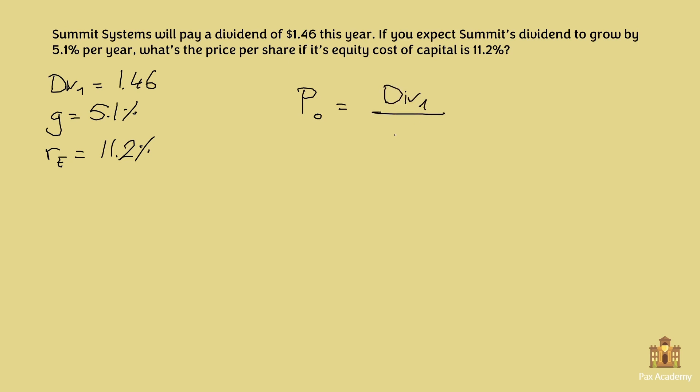So then we can plug in the numbers that we have, and we get 1.46 over rE in decimal places 0.112 minus the growth rate in decimal places 0.051. And if you plug this into your calculator you should get...